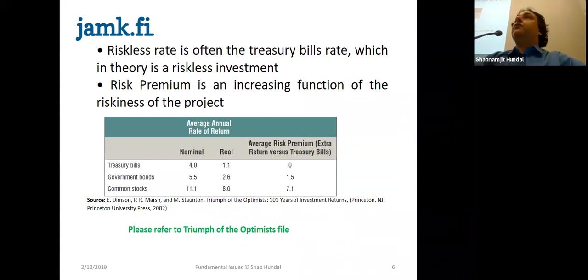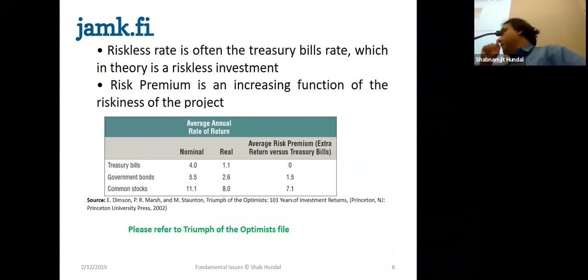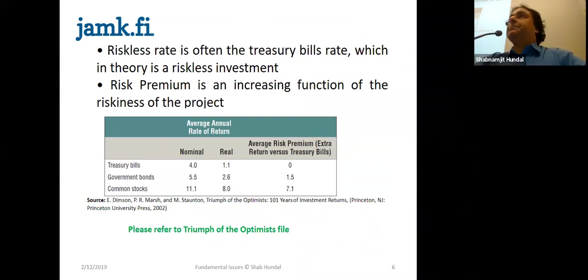It means the investors in Italy for the last 100 years felt that it's very risky to invest in company shares. Whereas the least has been in Denmark — around 4%, which is okay but not so big. Whereas in Italy it's over 10%. If the Italian state gives you 1% risk-free rate, then when some Italian company comes, you'll be demanding 11% — 1 plus 10. So the state can borrow from you at 1%, but the private company has to offer you 11%.